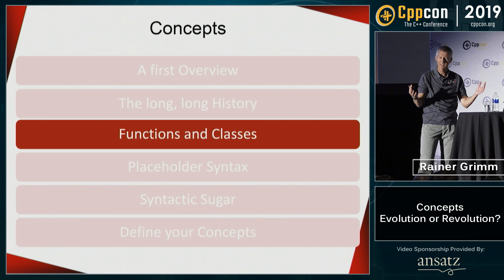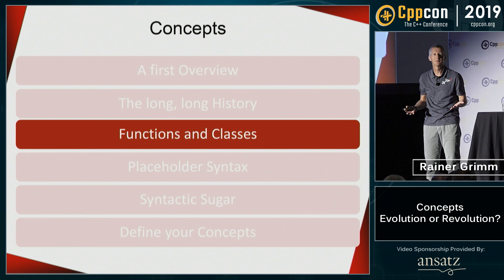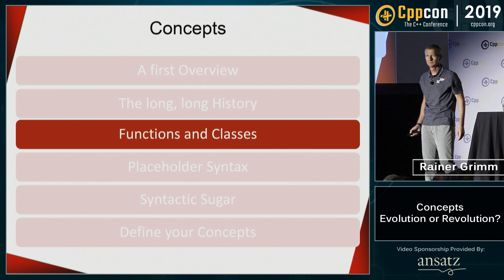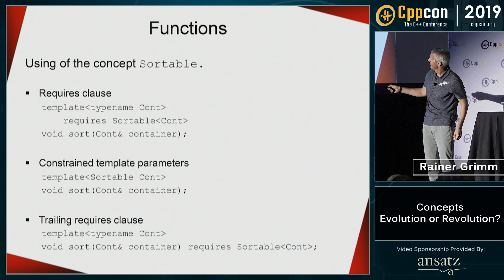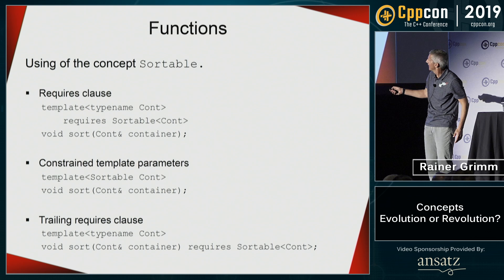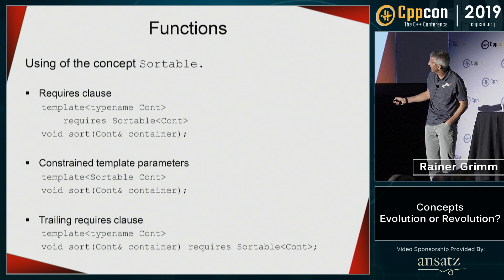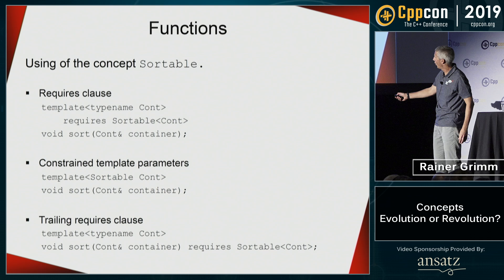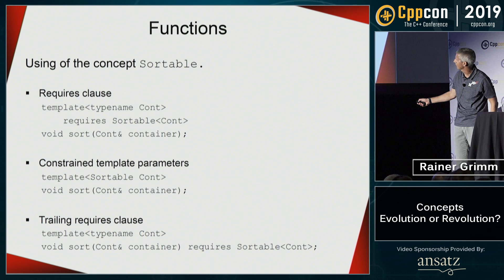Now a little bit about use cases for concepts — just to see they are boring, meaning they behave exactly the way they should. Three ways to use a concept: the initial version says the container should support the concept sortable to be used in function template sort. There's also syntactic sugar where you use the concept instead of typename or class. Or you can use a trailing requires clause and specify it later. I most often use the first two versions.